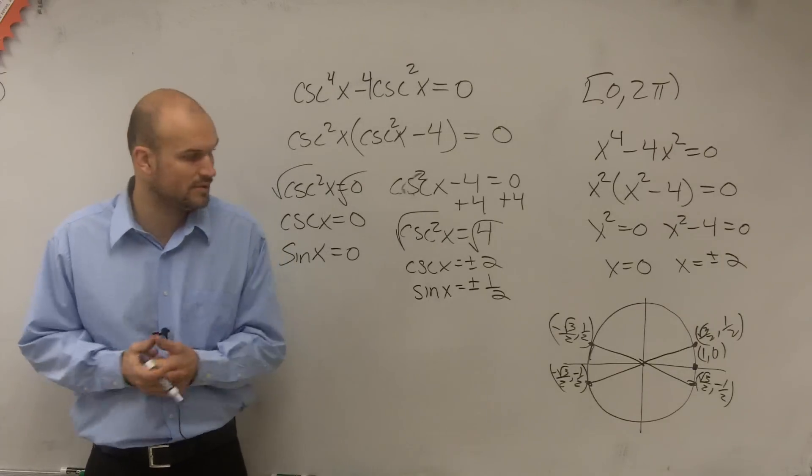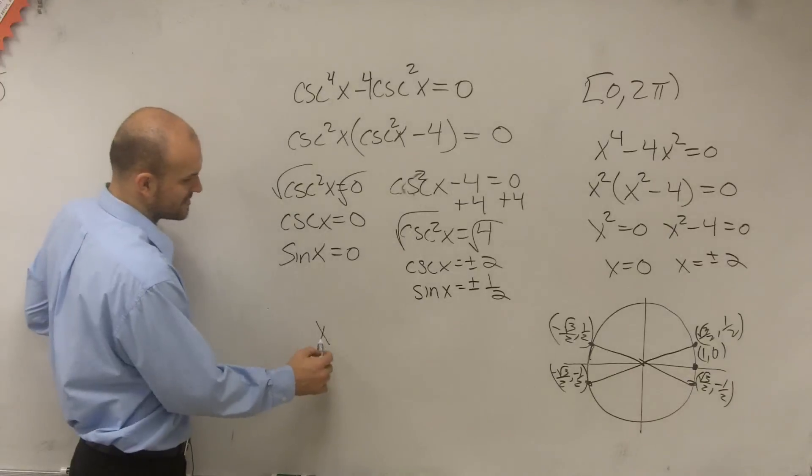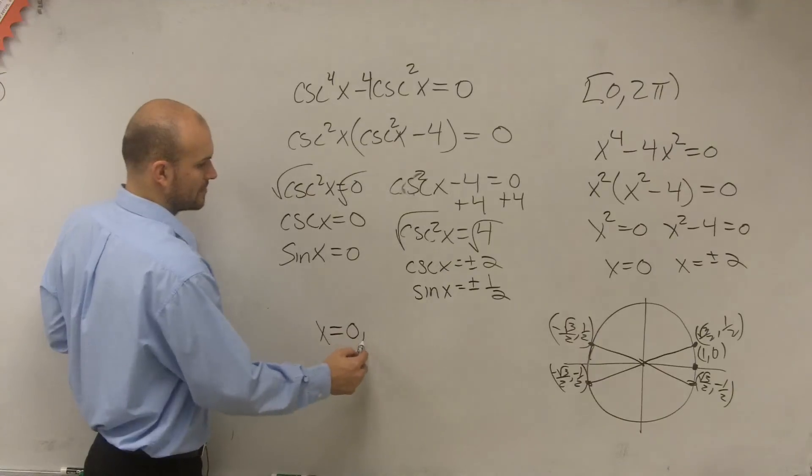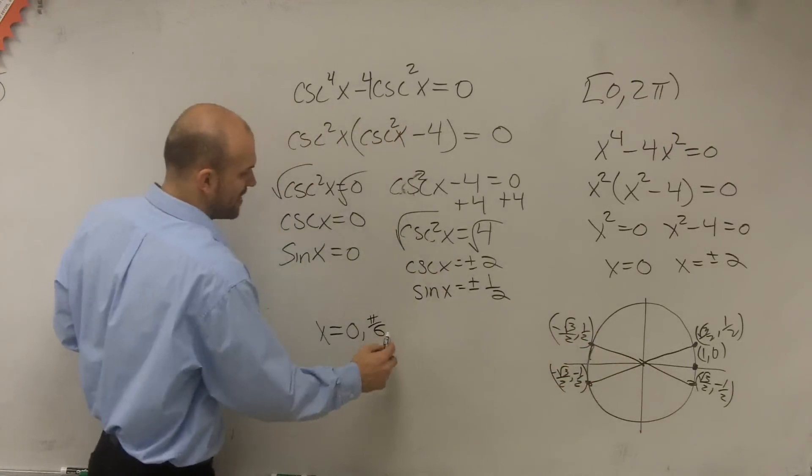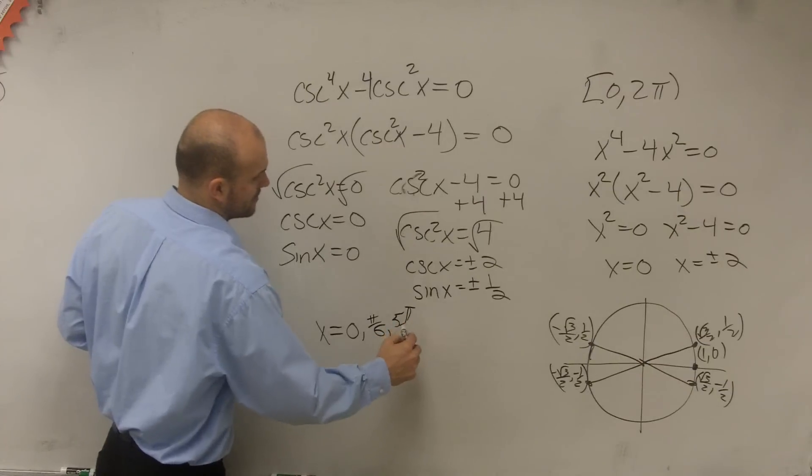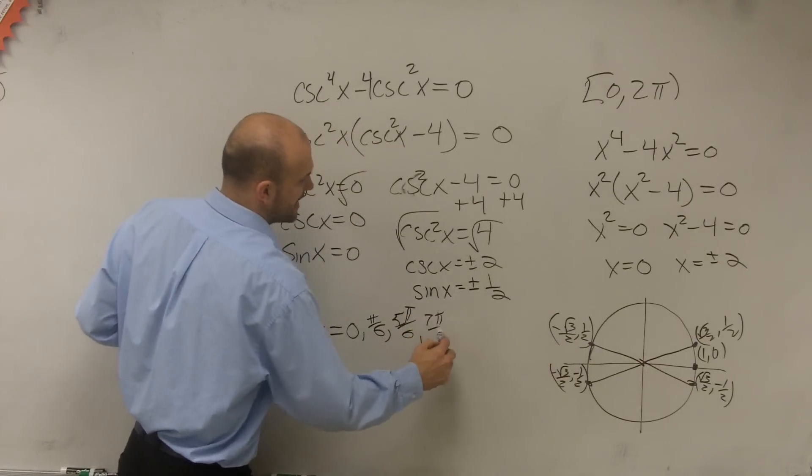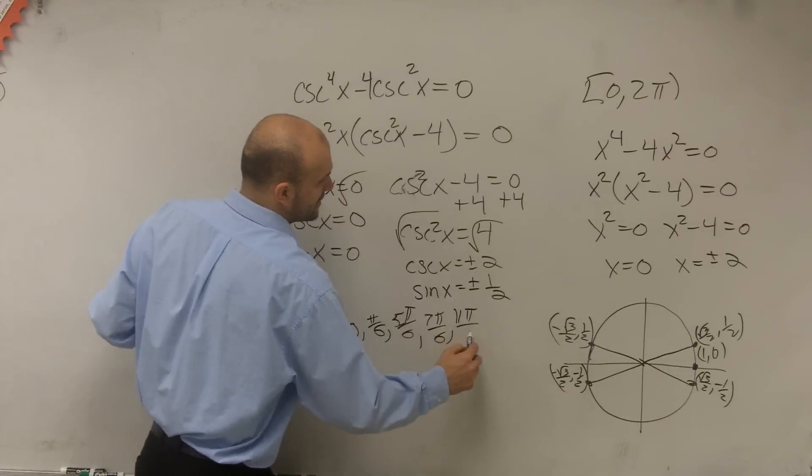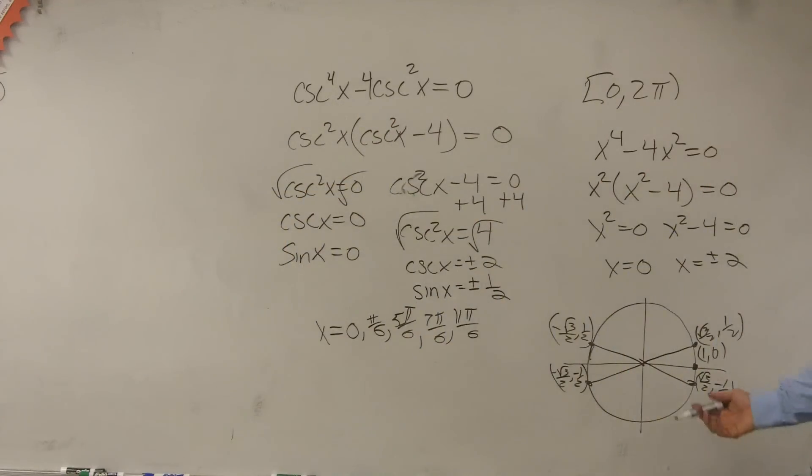So now what I simply need to do is just list all of those values. So therefore, I can say x is going to equal the angle 0, pi over 6, which would be this angle, 5 pi over 6, which is this angle, 7 pi over 6, which is this angle, and then 11 pi over 6, which is that angle. So therefore, there's multiple solutions that make this equation true.